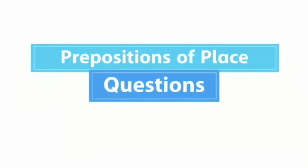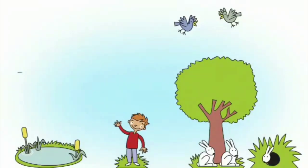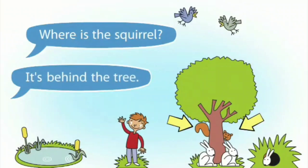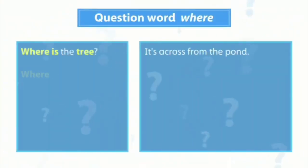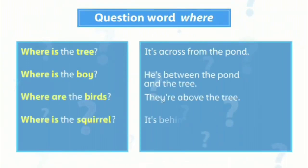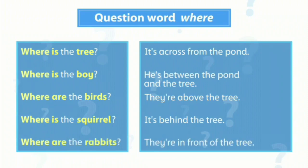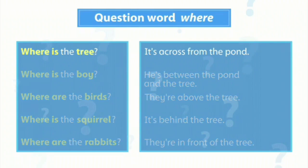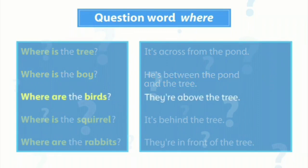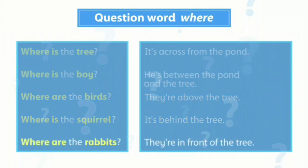Prepositions of place questions. Where is the squirrel? It's behind the tree. To ask a question about the location of a person or thing, we use the question word where, is or are, and the person or thing we're asking about. Where is the tree? It's across from the pond. Where is the boy? He's between the pond and the tree. Where are the birds? They're above the tree. Where is the squirrel? It's behind the tree. Where are the rabbits? They're in front of the tree.